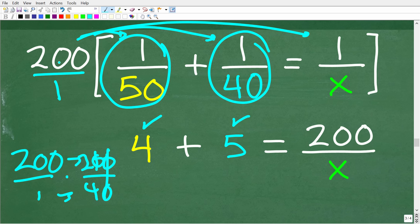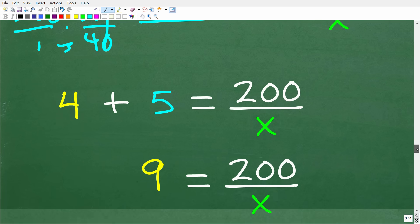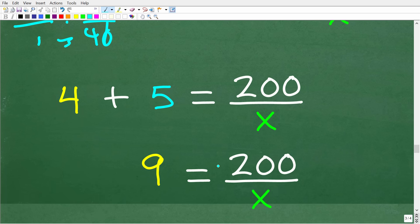So, we have 4 plus 5 is equal to 200 times 1 over x. And that is going to be 200 over x. So, continuing on, we can add 4 and 5. Of course, that will be 9. So, now we're down to 9 is equal to 200 over x.